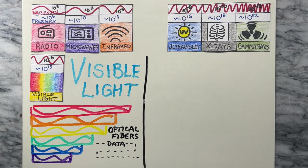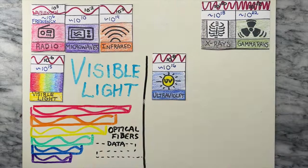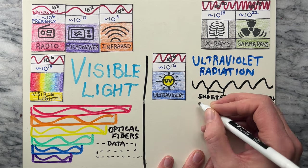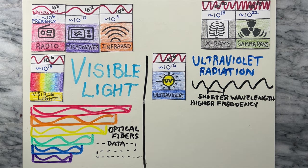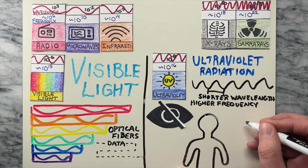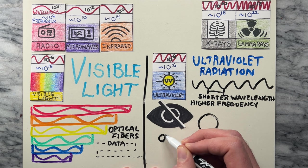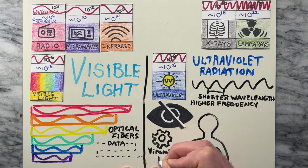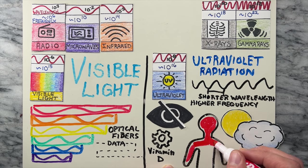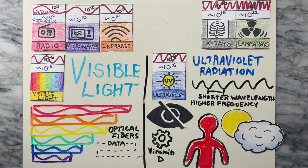The next part of the spectrum gets a little more intense with shorter wavelengths than visible light and higher frequency — that is ultraviolet radiation, also known as UV radiation. These waves are invisible to our eyes but play a crucial role in triggering the synthesis of vitamin D in our skin. However, too much can cause sunburns and be very harmful under excessive exposure.